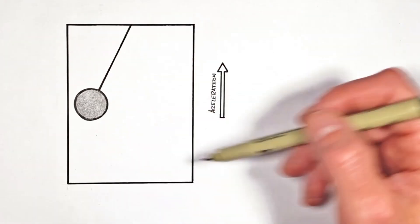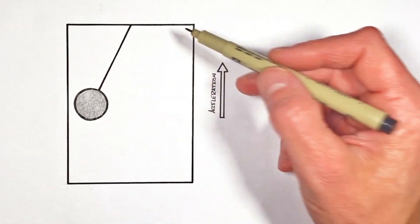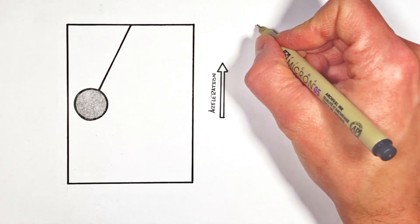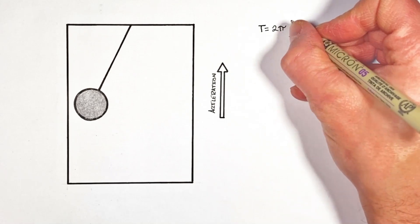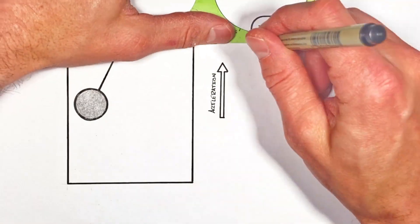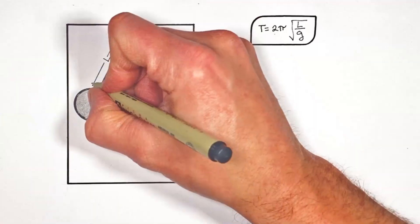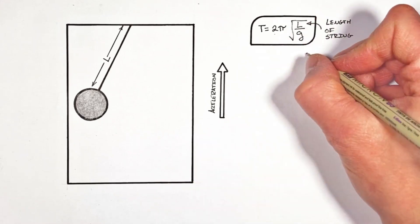You see a pendulum which isn't in an elevator but rather attached to a stationary point has a period which is given by T equals 2π times the square root of l over g, where l is the length of the string connected to the pendulum and g is the acceleration due to gravity.